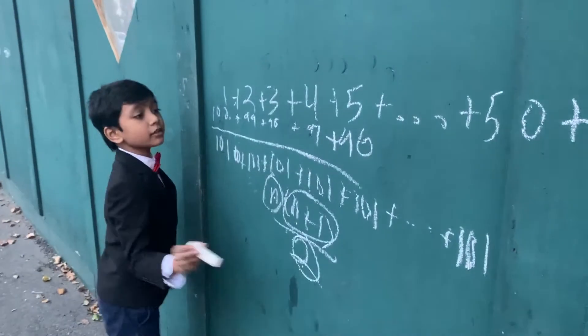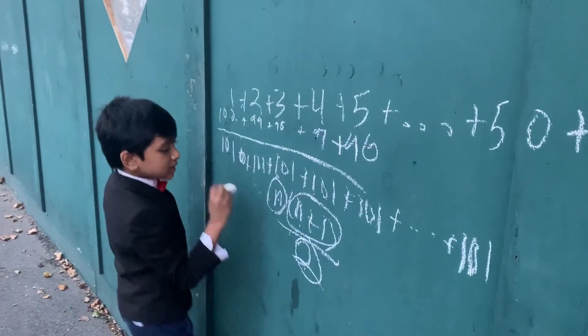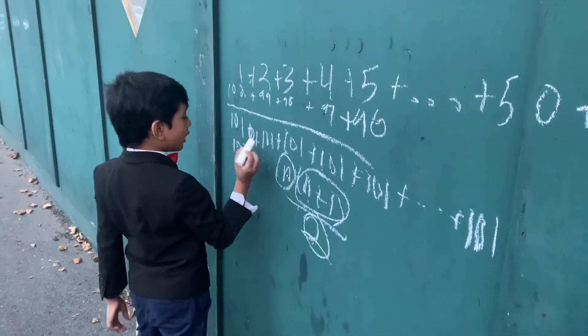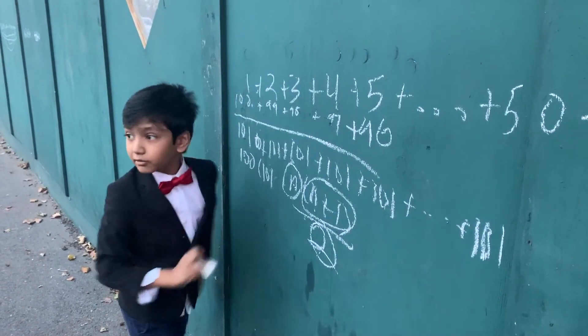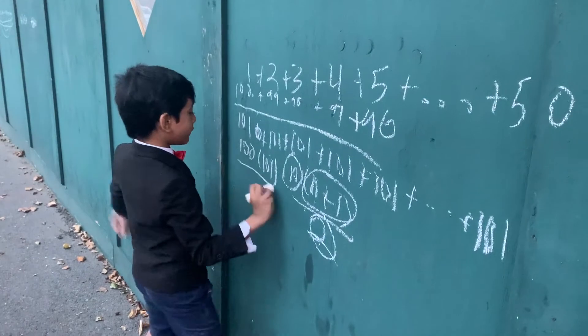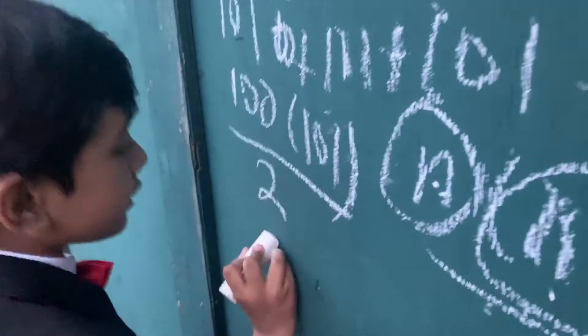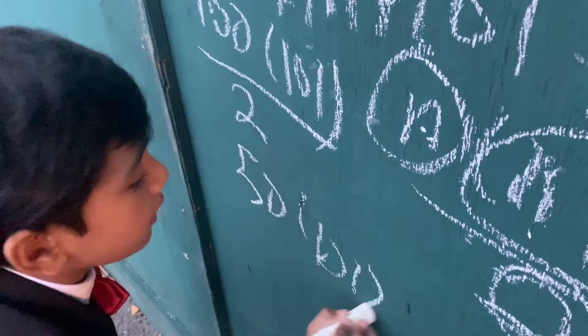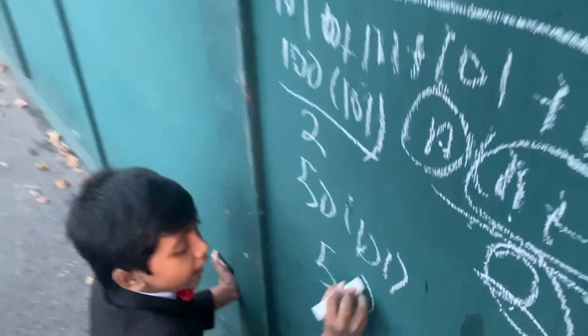With that, that is the Gaussian sum. But we can test this out first. Let's put 100 times 100 plus 1 is 101 over 2. So that's going to be 50 times 101, which is 5050.